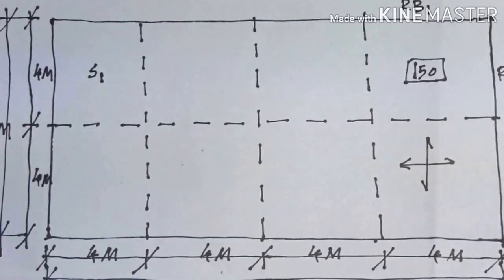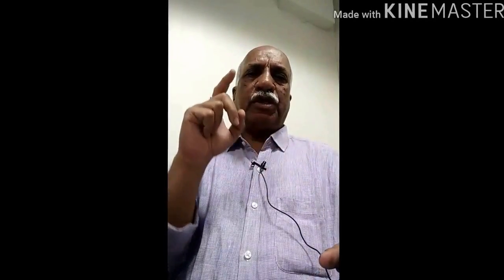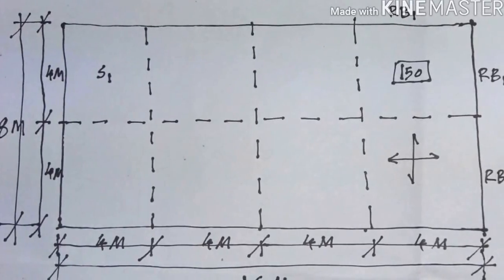So far: we looked at the slab geometry and beam cross-section, found the slab area, then calculated cement required from the area. From cement we found sand required, and from sand we found the aggregate required. Now we move to the beams.